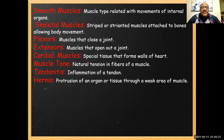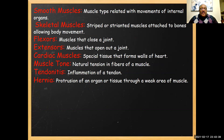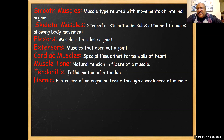Smooth muscle is involuntary — it covers movements you don't have to think about, like swallowing, digestion, and the movement of your intestines. Skeletal muscles, if you see the term 'striated' or 'striped,' that means they have stripes in them — when you look under a microscope, you can tell the difference between skeletal and smooth muscle.